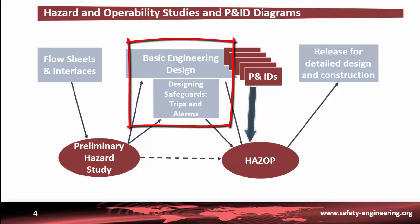The basic HAZOP method is used to specify the node, the expected behavior and the effect of deviations. This method is used to identify hazards to health and safety as well as operability issues which might impact profitability or the environment.